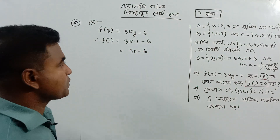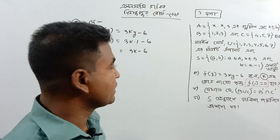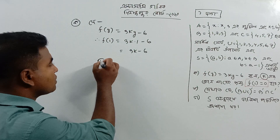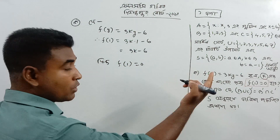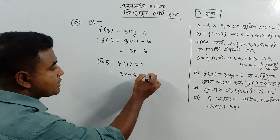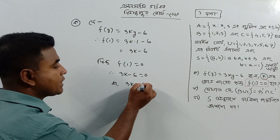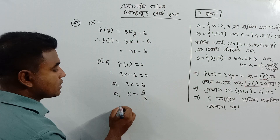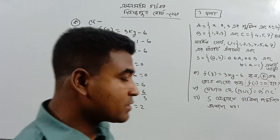3k minus 6. Since f of 1 is equal to 0, we can write 3k minus 6 equal to 0, so 3k equal to 6, therefore k equal to 6 by 3, or k equal to 2.